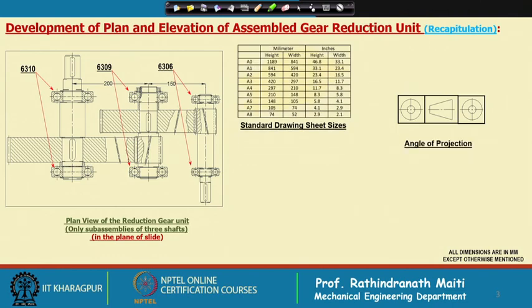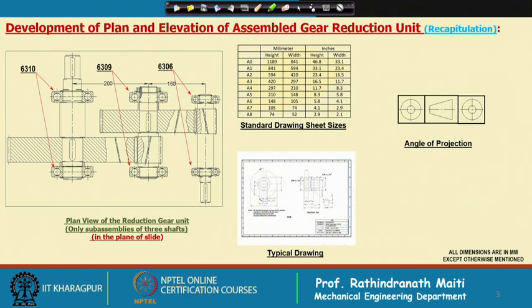In the last lecture, we discussed why we have taken a 1:1 scale and we will accommodate everything inside that. We are following the third angle projection for the viewing. This is a typical drawing view at scale 1:1. However, we have changed the bearings to 6205, 6208, and 6209.